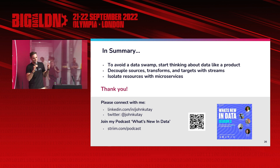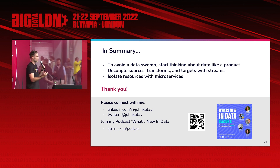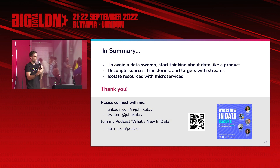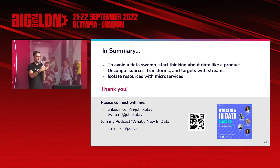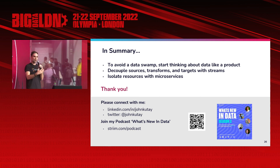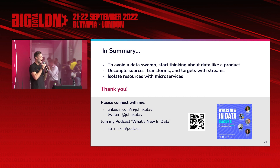In summary, to avoid a data swamp, start thinking about your data like a product — think about end users and business use cases first, then model your infrastructure based on that. Decouple your sources, transforms, and target systems with streams, and isolate resources with microservices and dedicated compute. This will help you deliver the principles that Zammak Degani was talking about in the data mesh keynote, allowing you to adhere to and serve all your business stakeholders independently with a decentralized data infrastructure. Thank you very much for attending today — I hope it was useful.